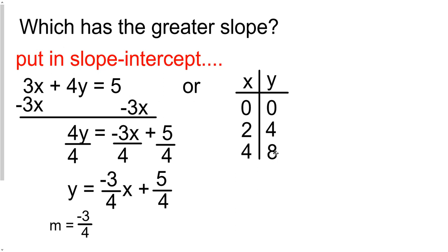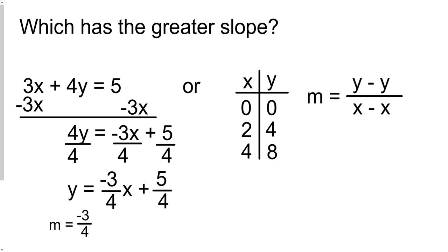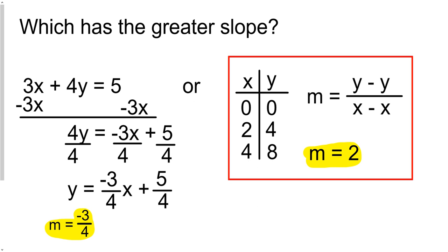And then as far as the table over here, well, you know how to get the slope. That's just y minus y over x minus x. I'm not going to bore you with the details of plugging that all in, but you'd quickly see that the slope is 2. So what's bigger, 2 or negative 3 fourths? Easily 2 is bigger. So this relationship over here has the greater slope.